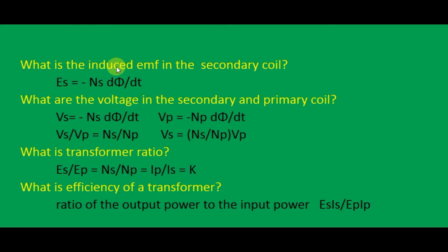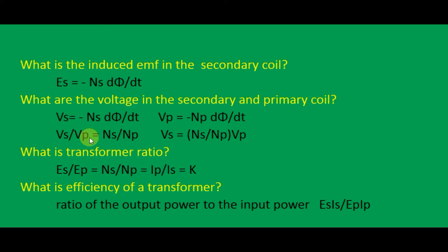What is the induced EMF in the secondary coil? The EMF in the secondary coil due to AC input in the primary coil: ES equals minus NS times dΦ/dt. The minus sign is written according to Lenz's law. So VS equals minus NS dΦ/dt and VP equals minus NP dΦ/dt. From this we get VS divided by VP equals NS divided by NP. Therefore, VS equals (NS / NP) multiplied by VP.